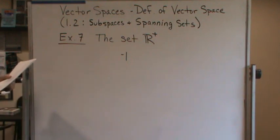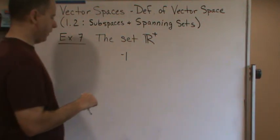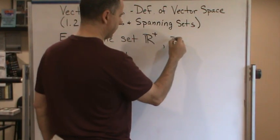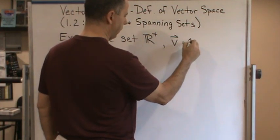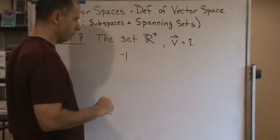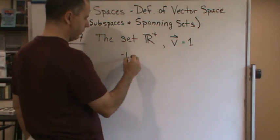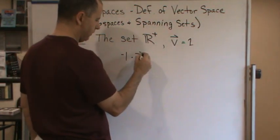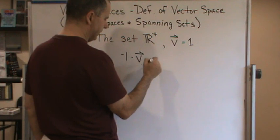Let's see here. So if I take, let's take the vector equal to one, and if I take negative one times v, I get...